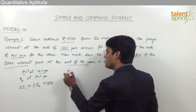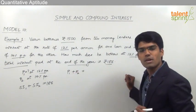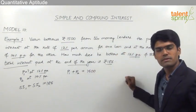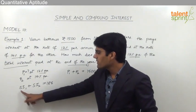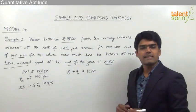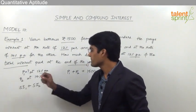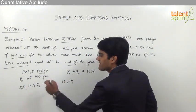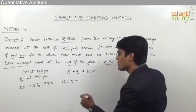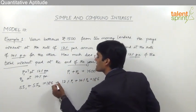From the given question, we know that P1 plus P2 — the total of both loans — amounts to Rs 1500. We also know that SI1 plus SI2 equals Rs 186. The first amount has been borrowed at 12% per annum, so the simple interest would be 12% of P1. The simple interest from the second loan would be 14% of P2, since that amount was borrowed at 14%. So: 12% of P1 plus 14% of P2 equals Rs 186.